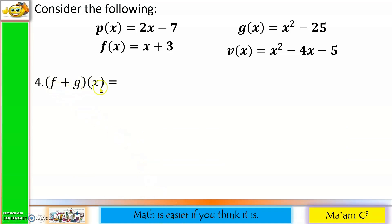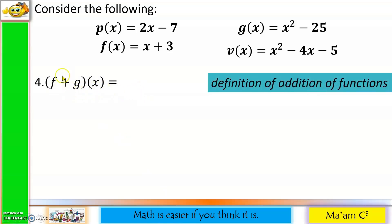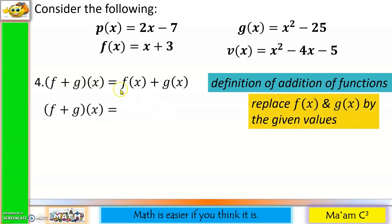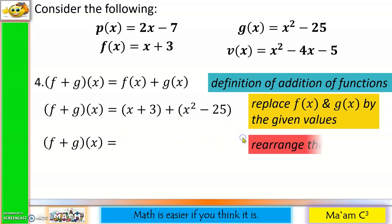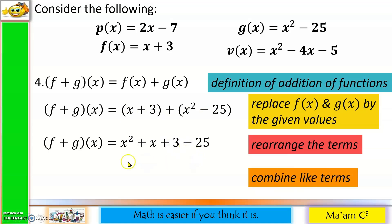Next, let us try (f + g)(x). The first step is the definition of addition of functions: f(x) + g(x). Replacing: f(x) is (x + 3) plus g(x) which is x² − 25. Rearranging the terms: x² + x + 3 − 25. Combining like terms: x² + x, and 3 − 25 = −22. So the answer for (f + g)(x) is x² + x − 22.